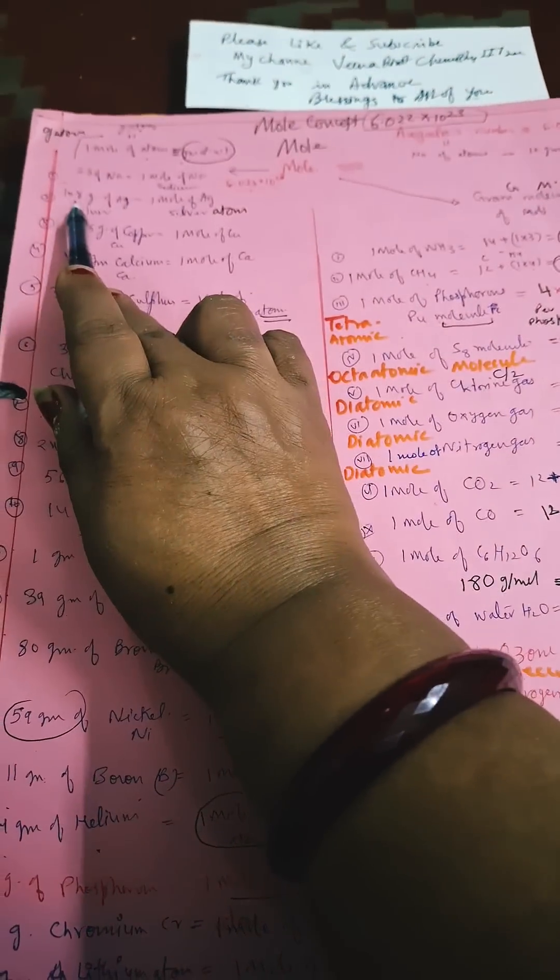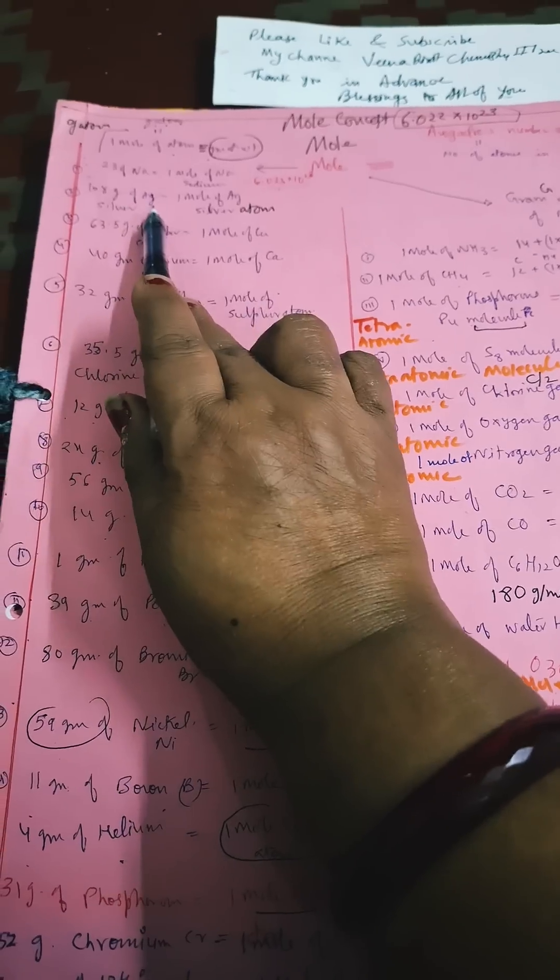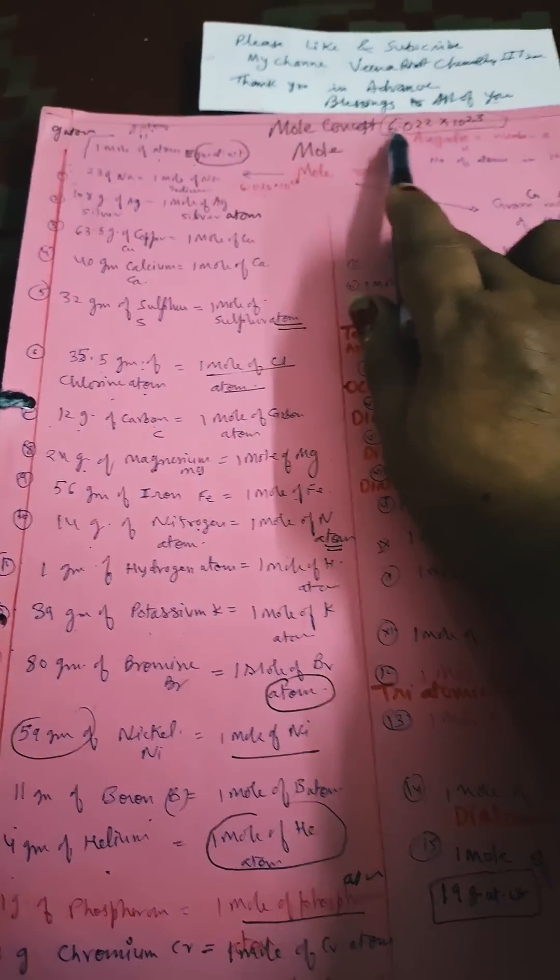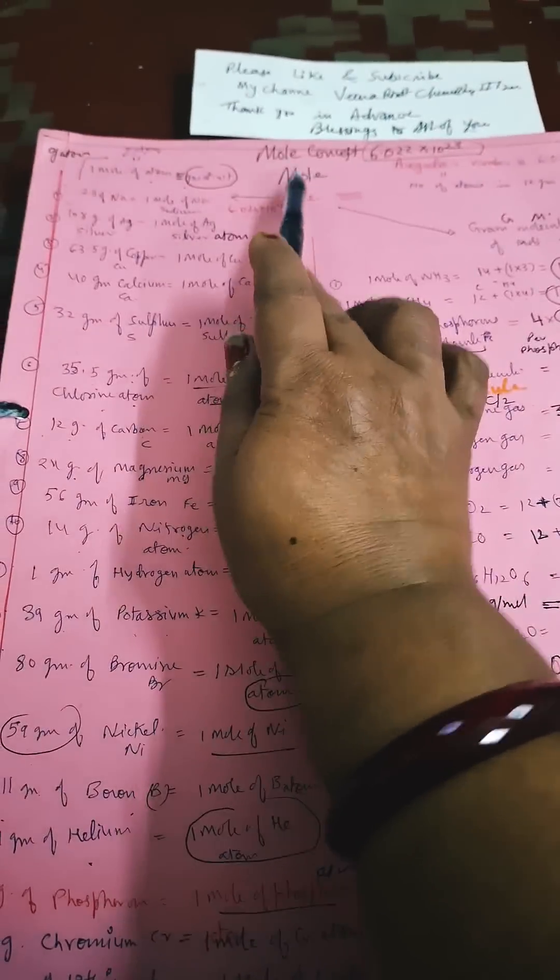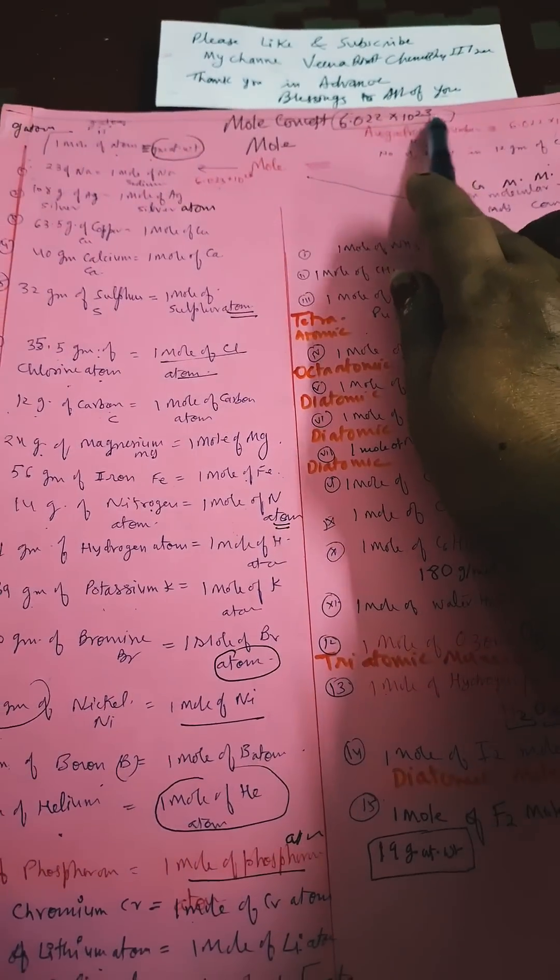If we say 108 grams of silver, that is one mole of silver, it will contain the same number, that is Avogadro's number: 6.022 × 10²³.